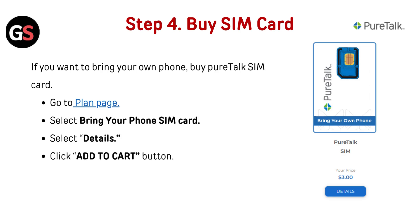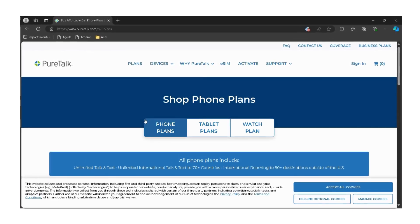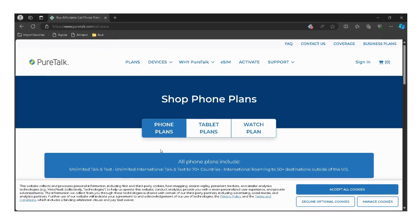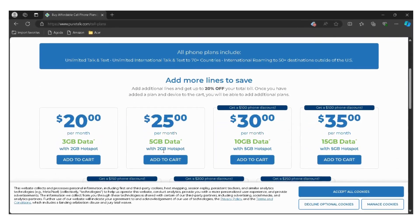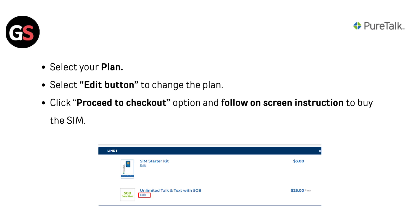Step 4: Buy a SIM card. If you want to bring your own phone, buy a PureTalk SIM card. Go to the plan page — the link is given below in the description. Select Bring Your Phone SIM card, then select Details. Click the Add to Cart button and select your plan. Click the Edit button to change the plan, then click Proceed to Checkout and follow the on-screen instructions to buy the SIM.